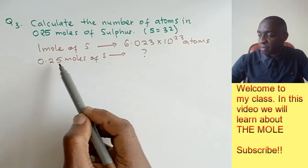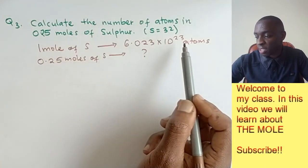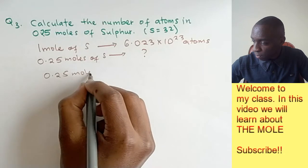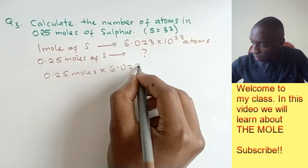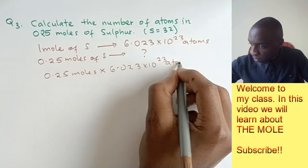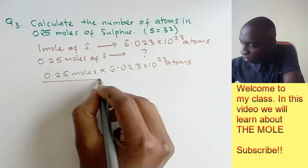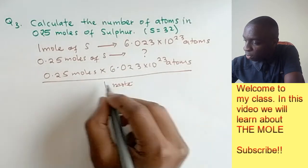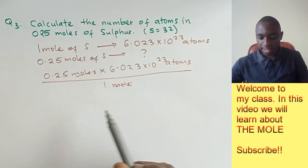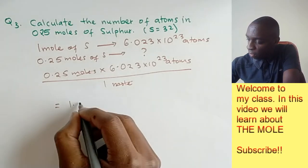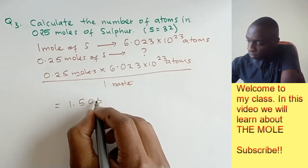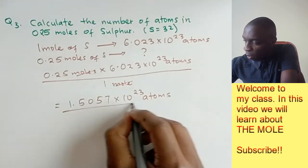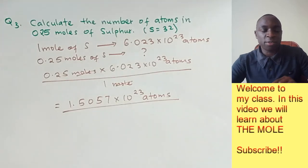We multiply 0.25 times 6.023 times 10 to the power of 23 divided by one mole. The moles cross out, and you end up with 1.5057 times 10 to the power of 23 atoms.